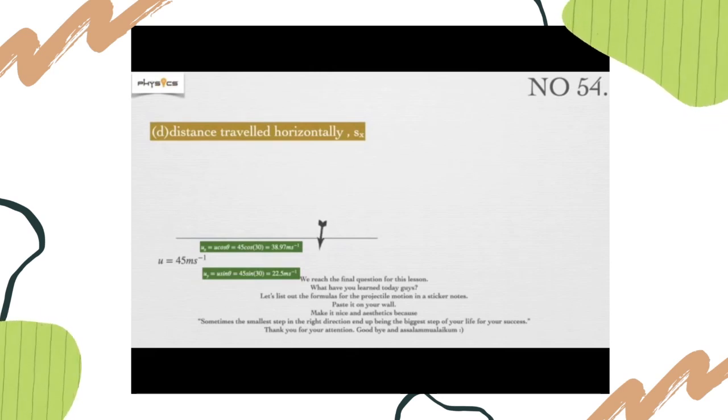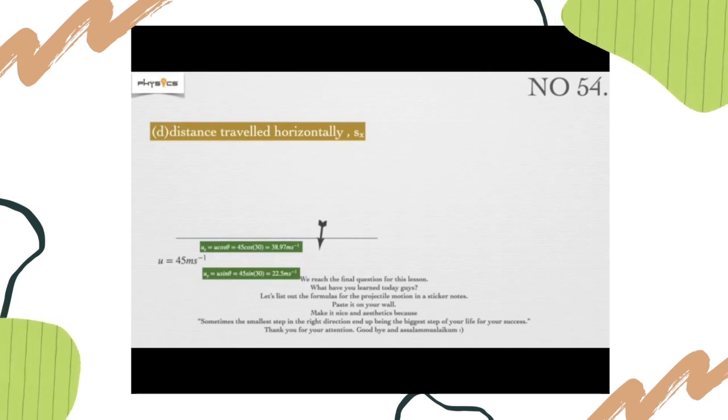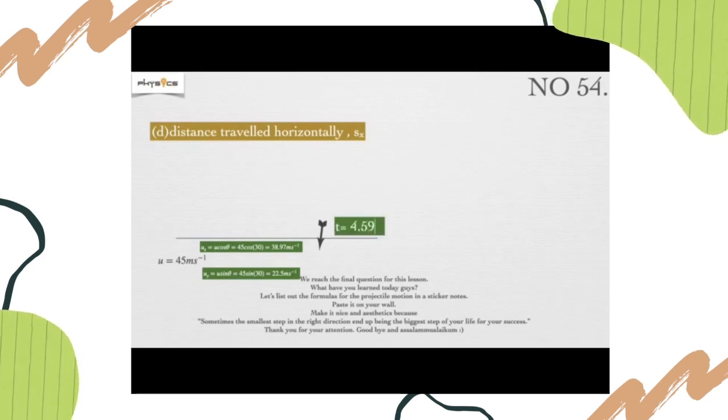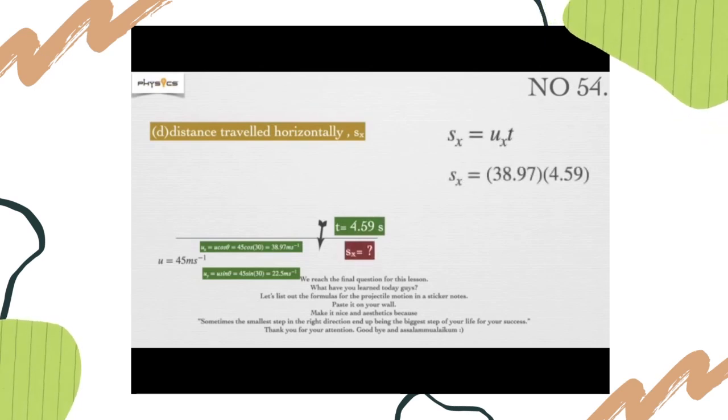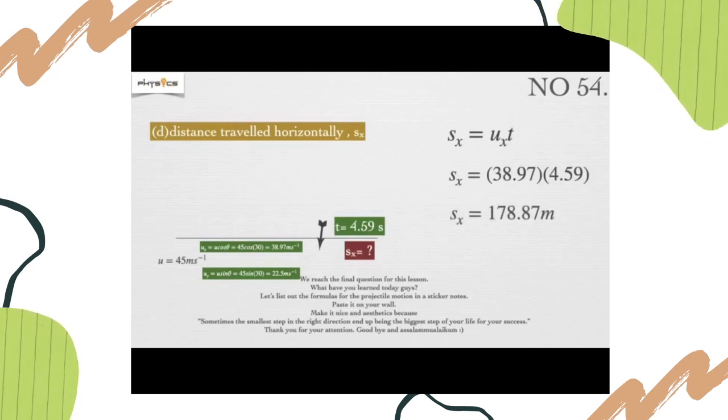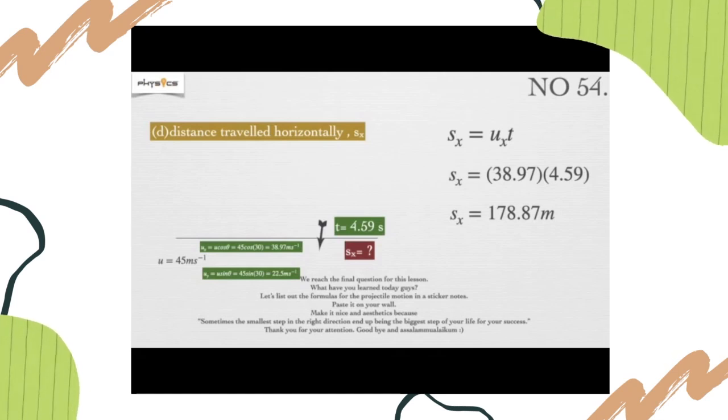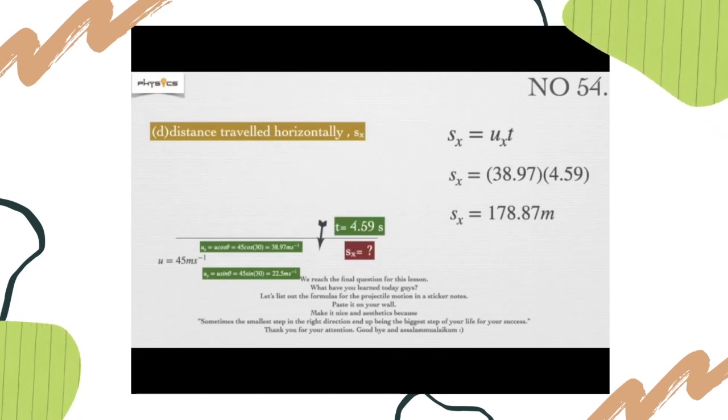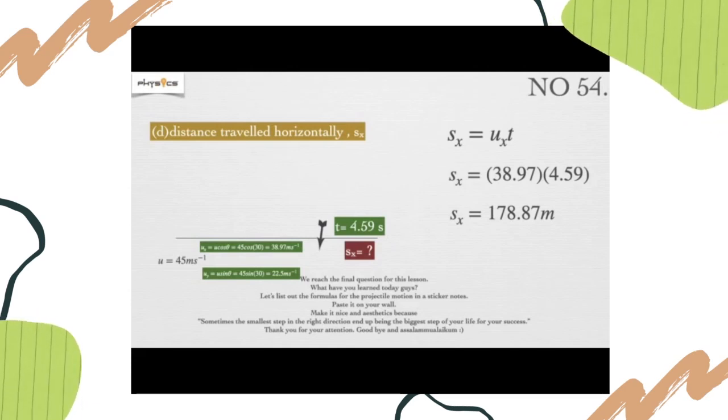This is the last question for our session, question D: the distance traveled horizontally. This is Sx. We got our Sx equals Ux times T. We already calculated Ux and also T. Substitute, and we got our Sx equals 178.87 meters.